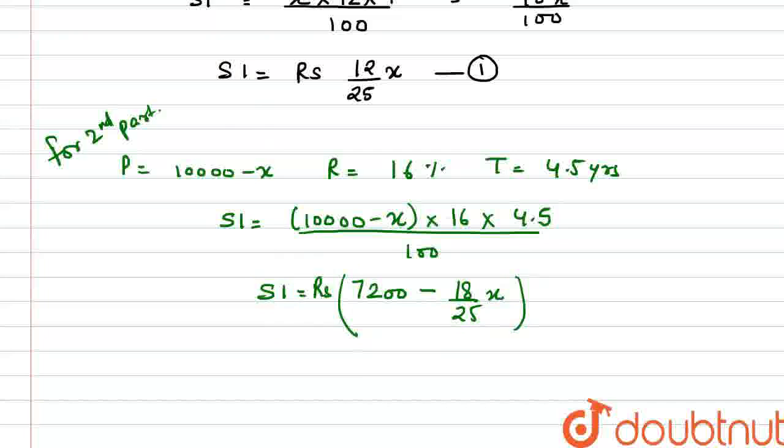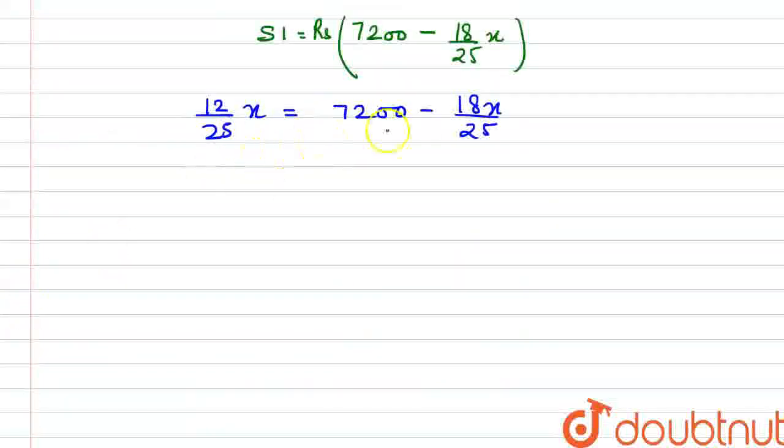Now, we have given in the question that the two values are equal. So, we have to equal these both. That is, 12 by 25x is equal to 7,200 minus 18x by 25. So this is our equation. Now, we have to solve it.